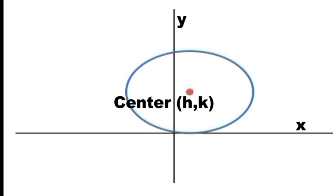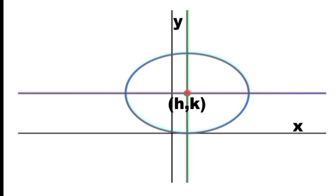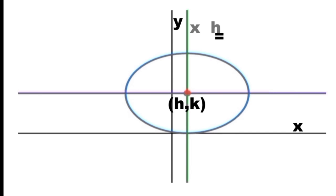Since the center is not at the origin but at point H, K, the major axis is the line passing through the center parallel to the X axis. So the horizontal line with equation Y equals K is the major axis. And the minor axis is the vertical line passing through the center with equation X equals H.